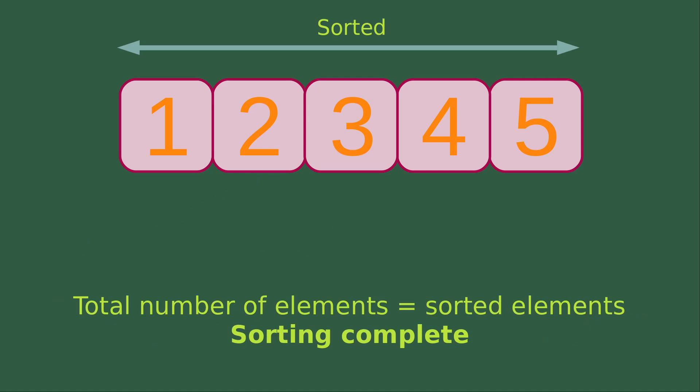Now we can see that all the elements are sorted because the total number of elements is equal to the number of sorted elements. Sorting is complete. Thank you for walking through the algorithm with me. If you have any questions about the process, feel free to leave your comments below the video. If you like this video, please give me a like and subscribe to my channel. Thank you for watching.